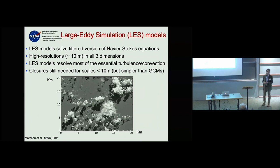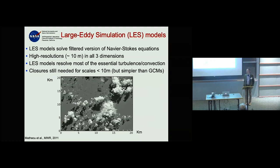Because of the small domain, we can use very high resolutions and actually resolve 80–90 percent of the turbulence that exists. Of course we don't resolve cloud microphysics — that's a different story.